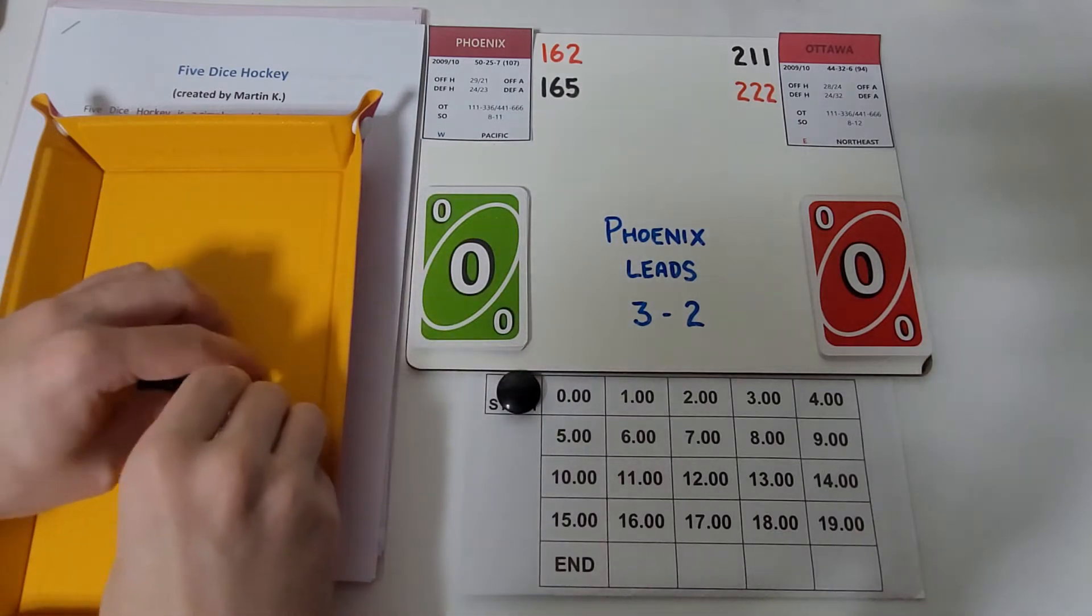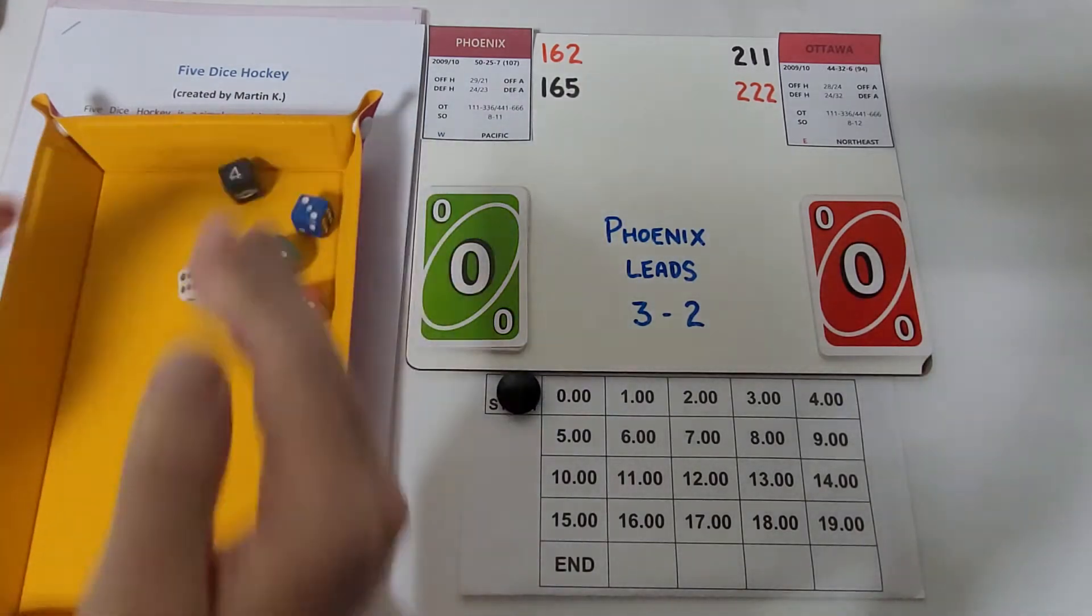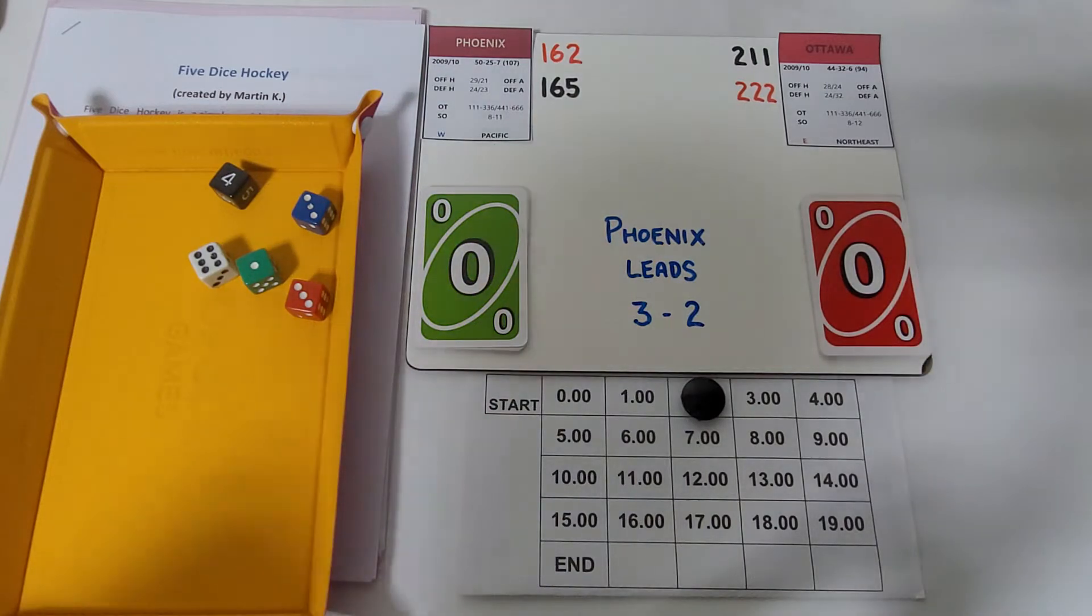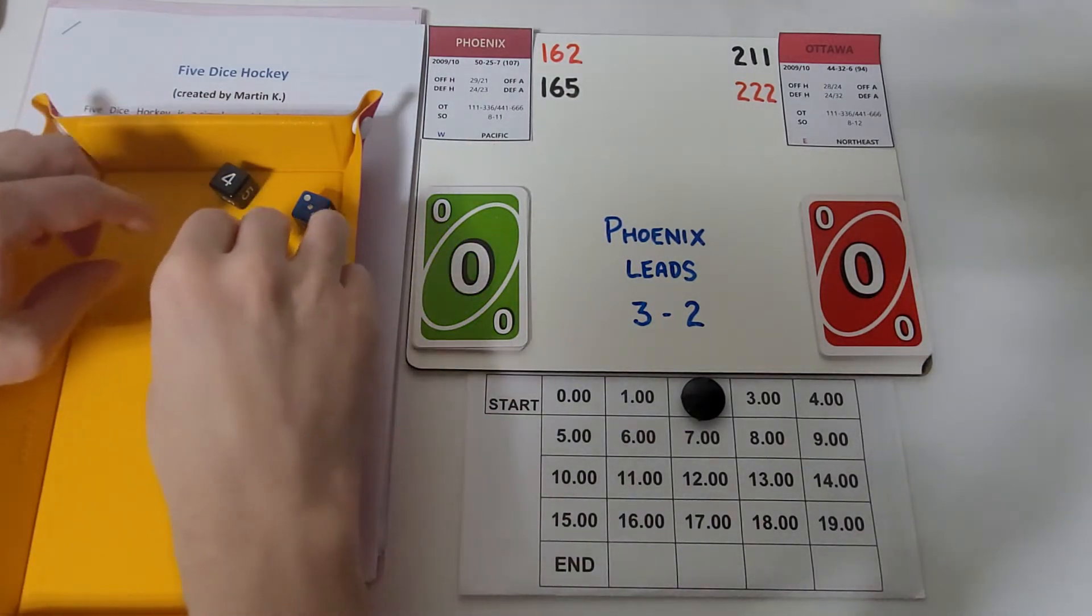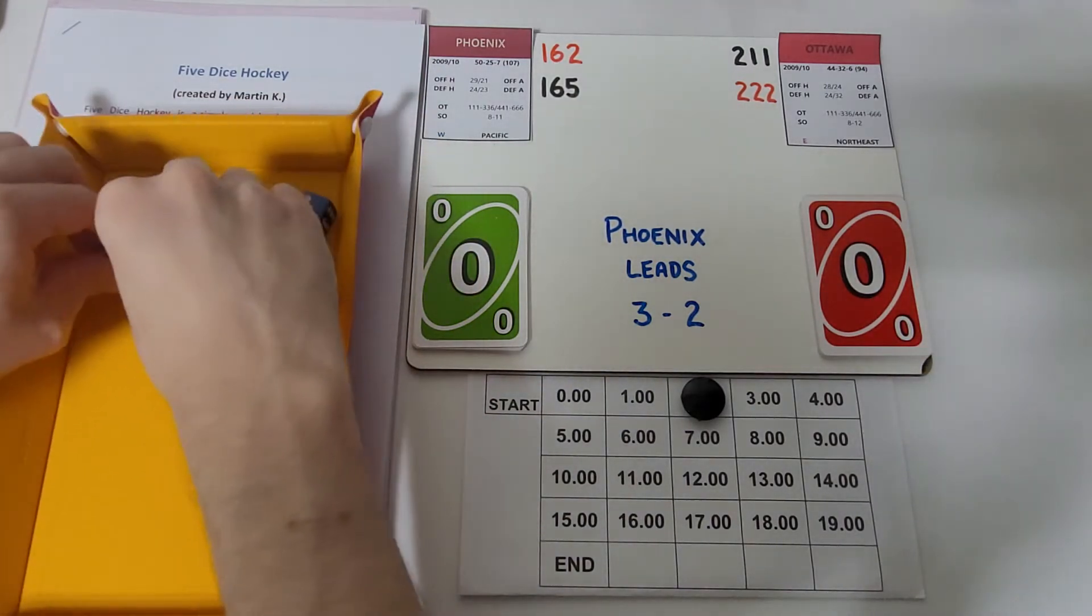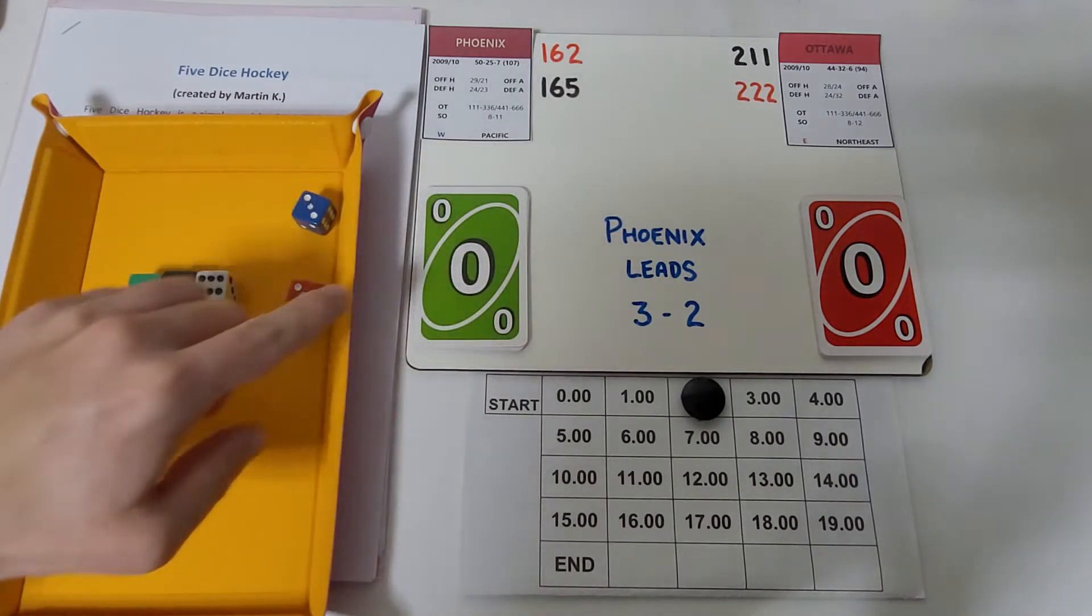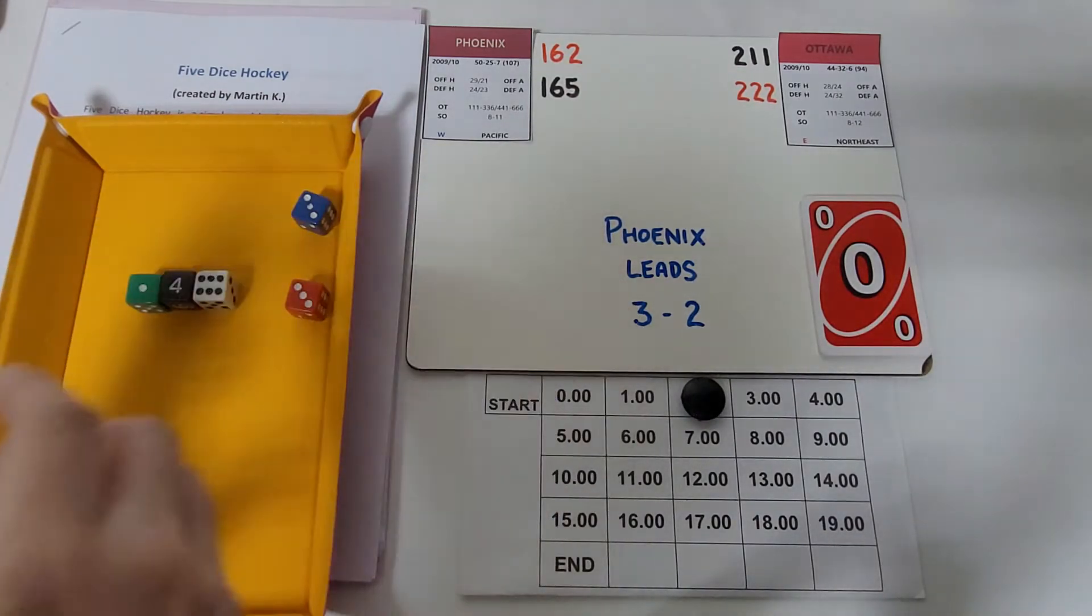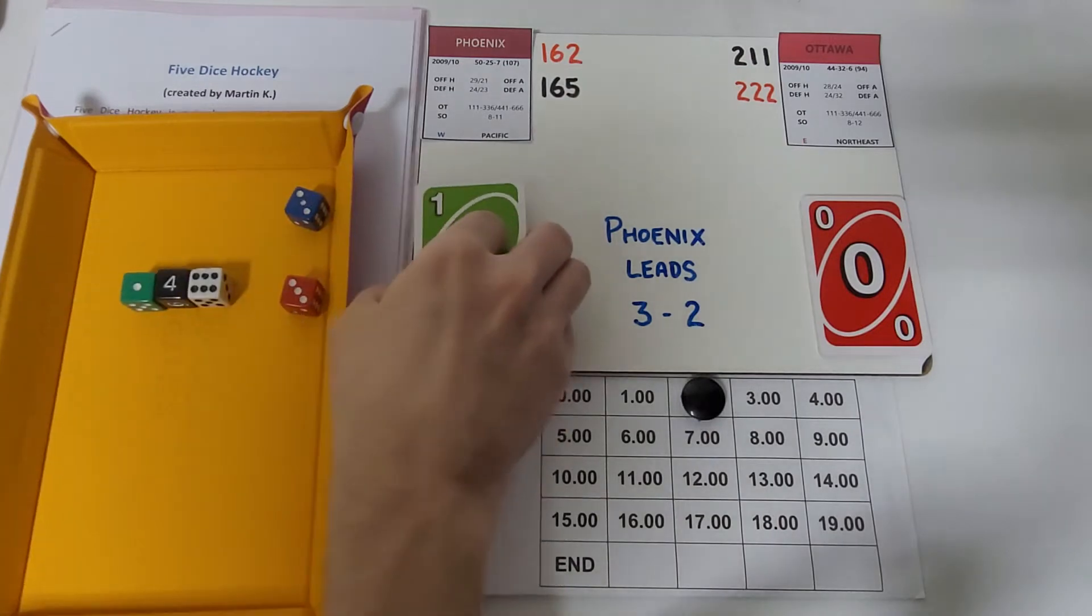Let's get this going here. This is Five Dice Hockey created by Martin K. This series is already five games old. We're going to take two minutes off here to get things started and right away we're going to get a goal.